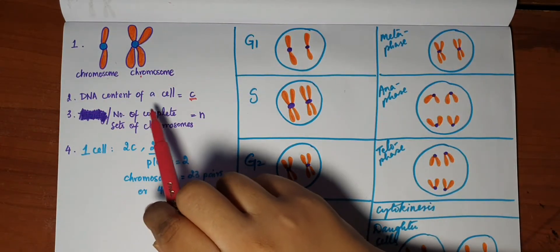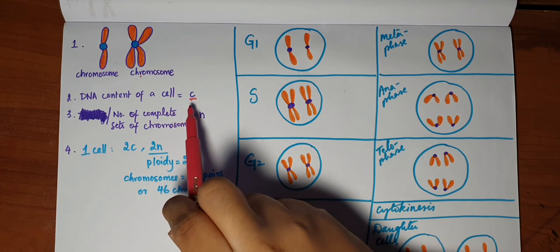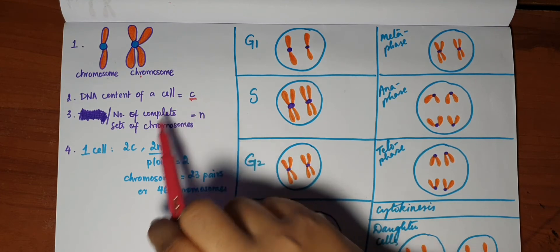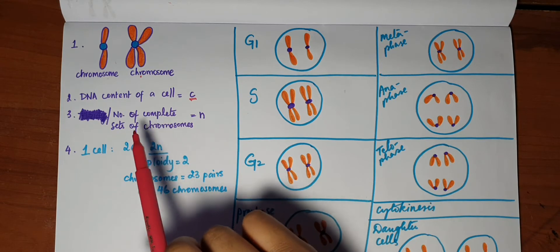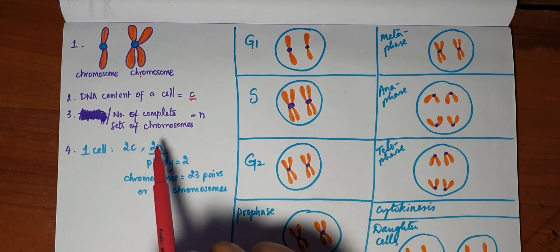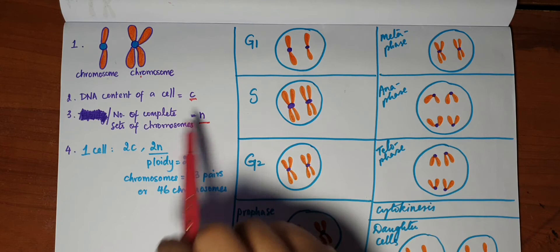Second, the DNA content of a cell is represented by the letter c, small c. Third, the number of complete sets of chromosomes contained in a cell is n.